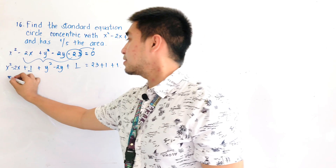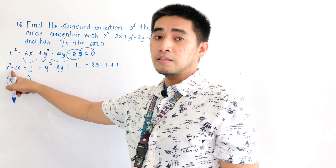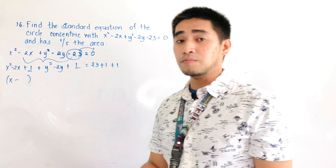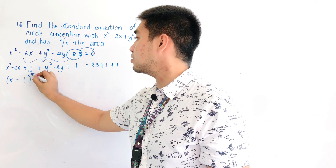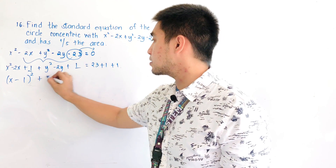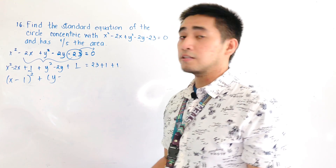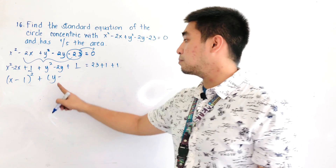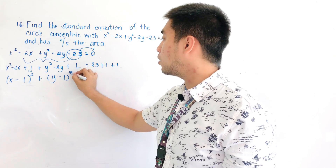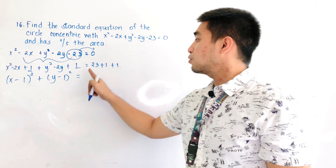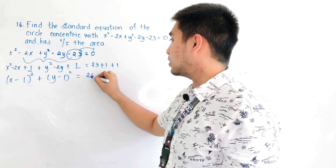Let us now factor. This gives x — the middle term is negative, so it becomes x minus 1, quantity squared — plus y — the middle term is negative, so it becomes y minus 1, quantity squared — equals 23 plus 1 plus 1, which becomes 25.